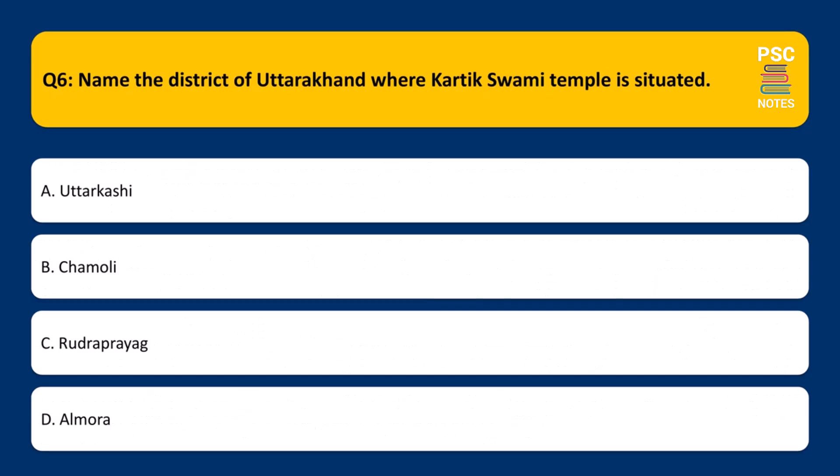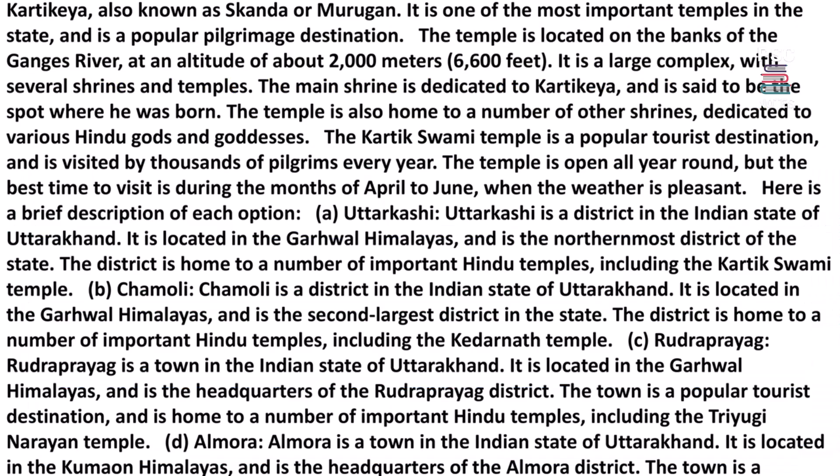Name the district of Uttarakhand where Kartik Swami temple is situated. A. Uttarkashi. B. Chamoli. C. Rudrapryag. D. Almora. The correct answer is A. Uttarkashi. Kartik Swami temple is situated in Uttarkashi, in the Indian state of Uttarakhand. The temple is dedicated to the Hindu god Kartikai, also known as Skanda or Murugan, and is one of the most important temples in the state and a popular pilgrimage destination.